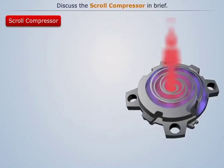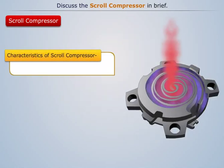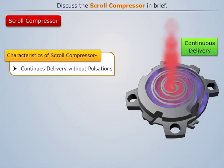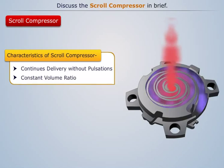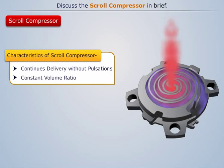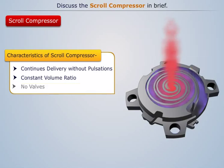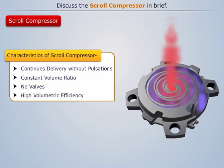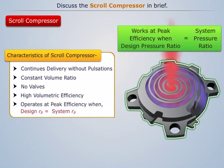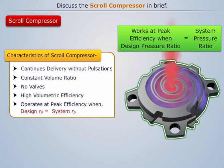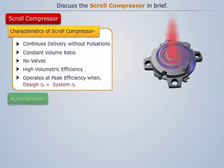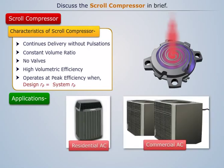The flow through this compressor is continuous with least pulsations. It is a constant volume ratio compressor, which is decided by the geometry of the scrolls and the location of the discharge port. It has no valves and has high volumetric efficiency. Scroll compressors operate at peak energy efficiency when the system pressure ratio equals the design pressure ratio. They are currently preferred in residential, commercial refrigeration, and automotive air conditioning, with capacity ranging from 1 TR to 14 TR.